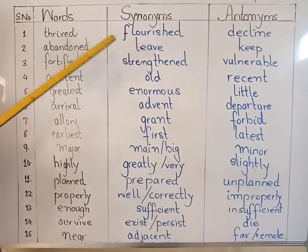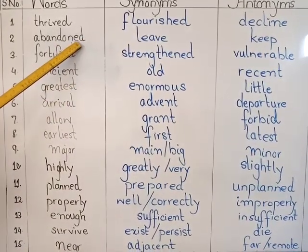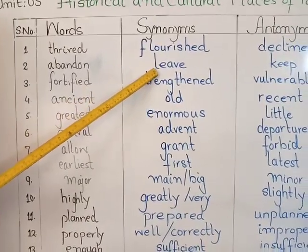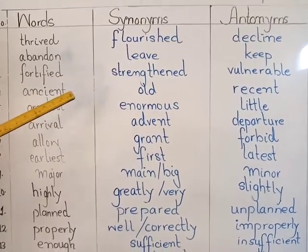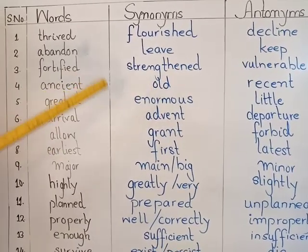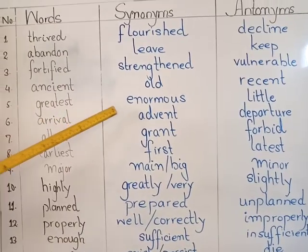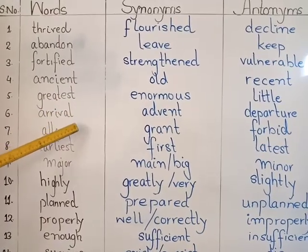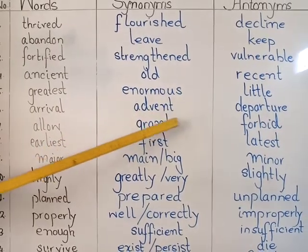Thrive: synonym is 'flourished', antonym is 'decline'. Abandoned: synonym is 'deserted', antonym is 'kept'. Fortified: synonym is 'strengthened', antonym is 'vulnerable'. Ancient: synonym is 'old', antonym is 'recent' — you can also write 'new' or 'modern'. Greatest: synonym is 'enormous', antonym is 'little'. Arrival: synonym is 'advent' — both mean aamad — and antonym is 'departure', meaning rawangi.